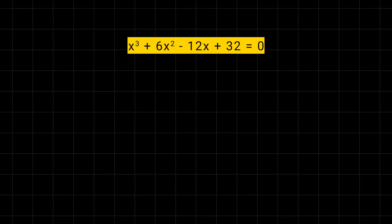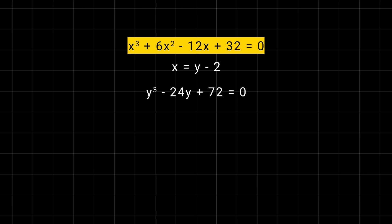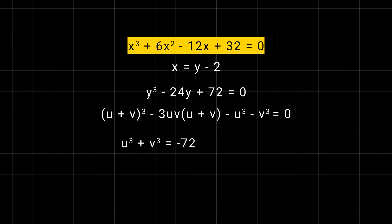Let's take an example to understand it properly. First we substitute x equal to y minus b over 3a to eliminate the quadratic term, so x equal to y minus 2. After simplification we get y cubed minus 24y plus 72 equal to 0. Now we compare this equation with the standard form and get u cubed plus v cubed equal to minus 72 and 3uv equal to 24, so u cubed times v cubed equal to 512.